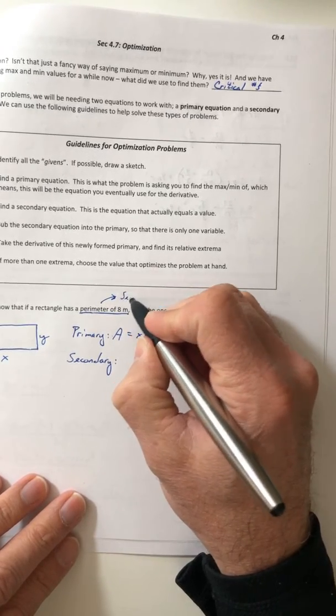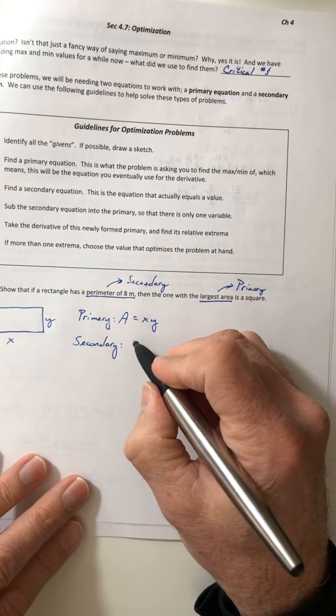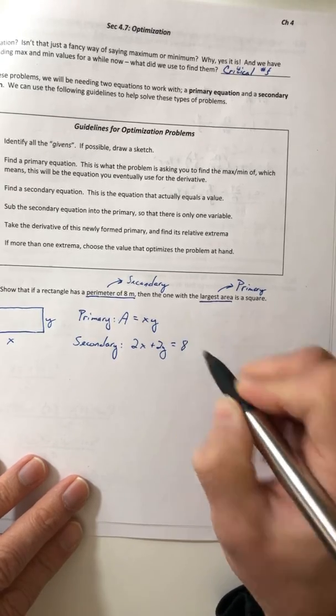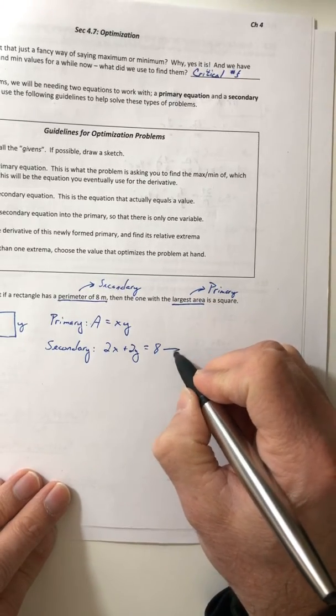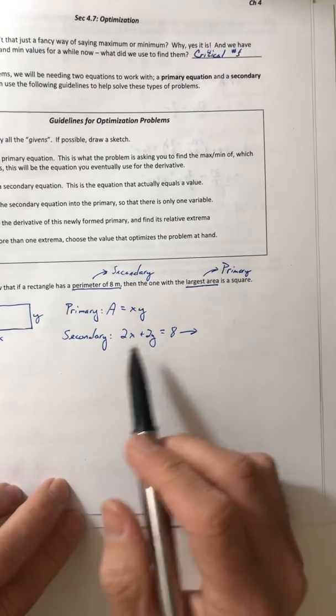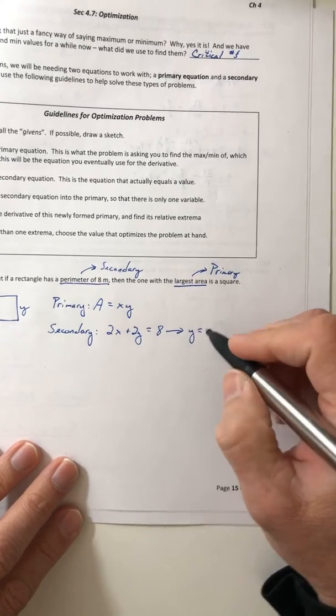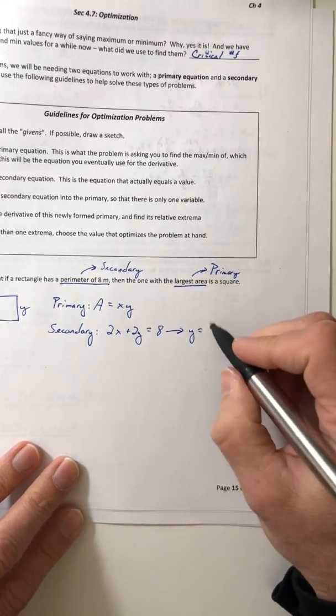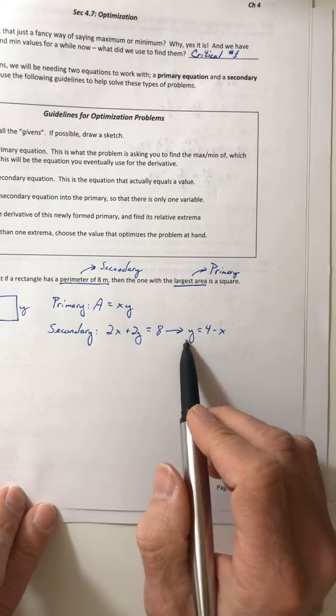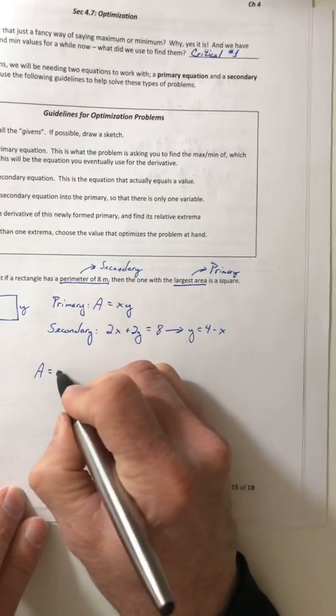Take your secondary and solve it for x or y, it's your choice. It didn't specify what dimension they wanted, so I usually like to solve for y. If you get the y by itself, y = 4 - x. Now you know what y is, so you're going to take it and substitute it into the area equation. Area was xy, but I'm going to plug in the 4 - x and distribute to get A = 4x - x².